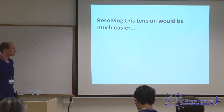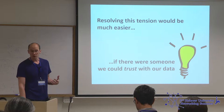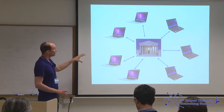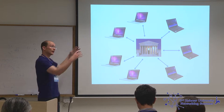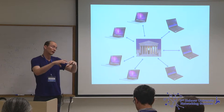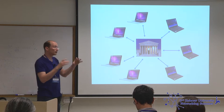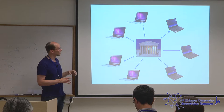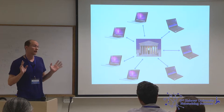Resolving this tension between privacy and utility would be a lot easier if there were some entity that everybody could trust with their data. In that case, you would take these various collections of data, send them to that central authority, and the central authority could run whatever algorithm you want — even deep learning — over the union of all the data, get the result, return different aspects of the result to the different parties, and afterward erase all the data so there's no threat of future compromise.